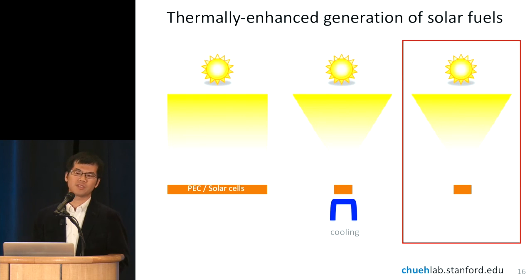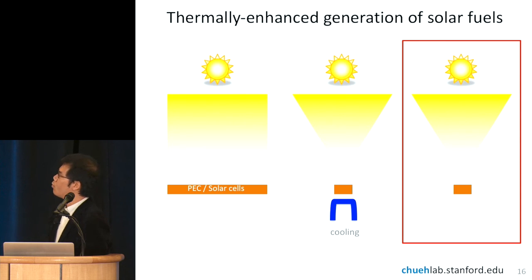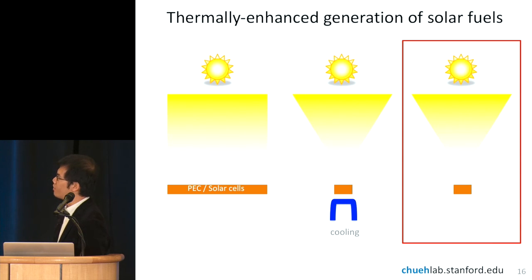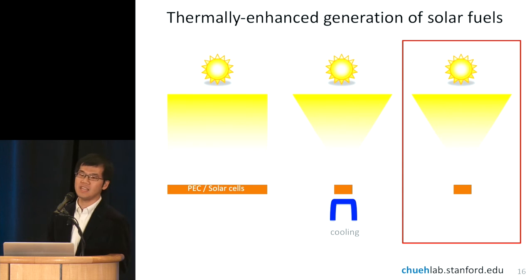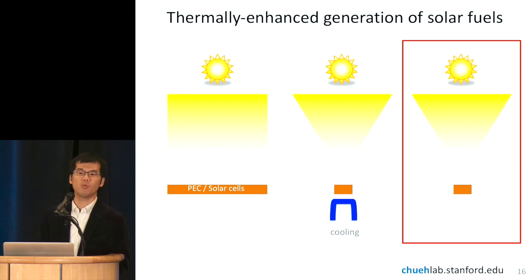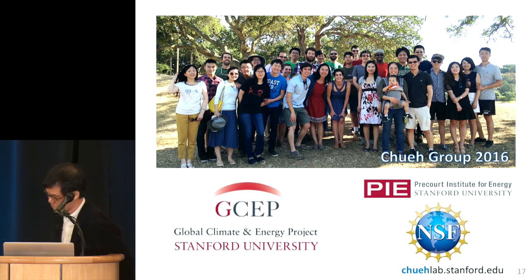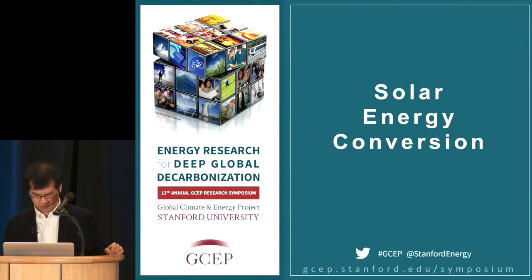To conclude: in the conventional world, light shines on a solar cell or PEC and we get solar fuels or electricity. If we concentrate light, we often have to cool the system to prevent performance degradation. But this work shows that heat can actually benefit carrier transport and catalysis in certain systems — so rather than cooling, we can take advantage of the heat being generated. Thank you very much for your attention.